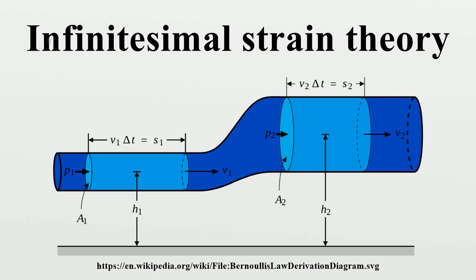The rotation vector is related to the displacement gradient by a specific relation. If the displacement gradient is small, the material undergoes an approximate rigid body rotation of magnitude around the rotation vector. Given a continuous, single-value displacement field and the corresponding infinitesimal strain tensor, since a change in the order of differentiation does not change the result, we can derive the relation between the strain tensor and the rotation vector, and also the relation between the rotation tensor and rotation vector from an identity regarding the curl of a tensor.